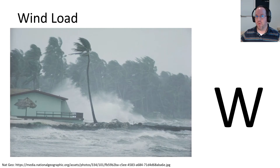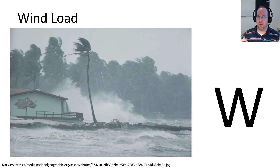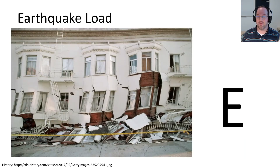Now let's move away from gravity and think about some other types of loads that act laterally rather than down on our structure. The primary lateral load for most regions around the country is going to be a wind load. This can be due to hurricanes, tornadoes, or other storm events. We'll call this load W. And if you're in a seismically active region, you'll also have a seismic load or earthquake load, which we call load E.